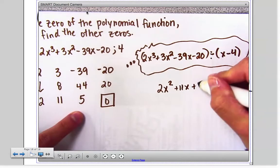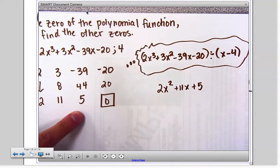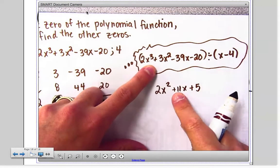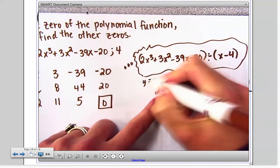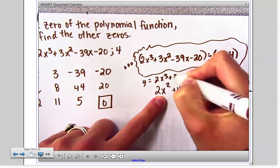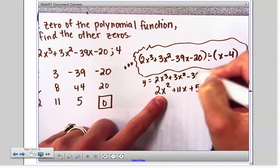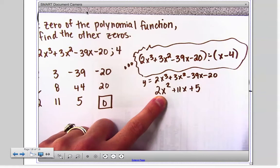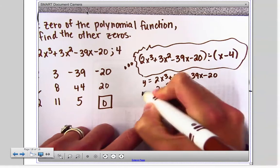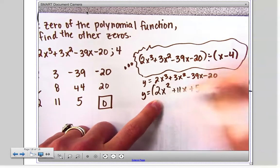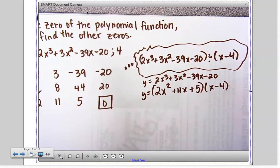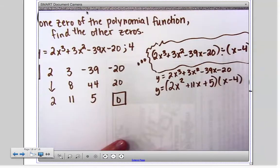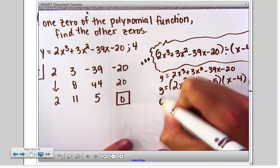So the answer to this problem is this. What this means is that y equals 2x to the third plus 3x squared minus 39x minus 20, that's equivalent to saying x minus 4 times this.